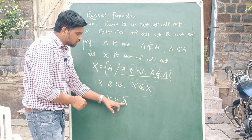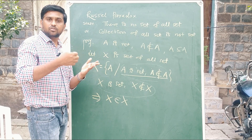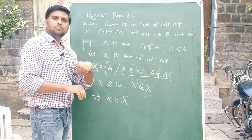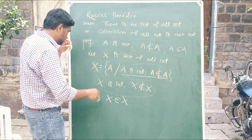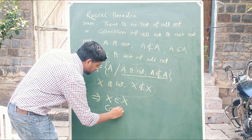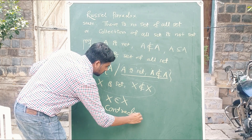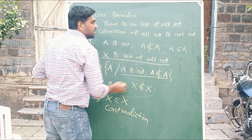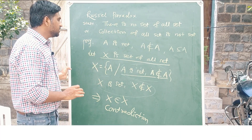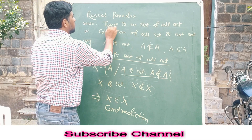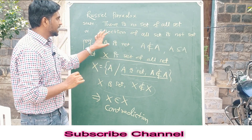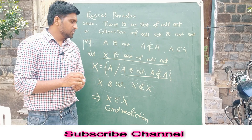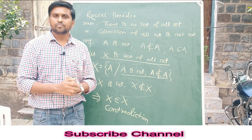We finally get: capital X belongs to X. But capital X belongs to X cannot happen, because of the fundamental property — any set cannot be an element of itself. This is a big contradiction. And hence our assumption that X is the set of all sets is wrong. Therefore there is no set of all sets, or we can say the collection of all sets is not a set. Thank you for watching this video, thank you very much.